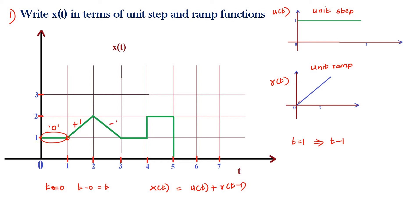Next, the slope is decreasing and the slope value is minus one. What is the change in slope? It is reduced, so put a minus sign. The change in slope is one, so it is minus one times the ramp. The starting point of this ramp signal is t = 2, so it is written as r(t − 2).